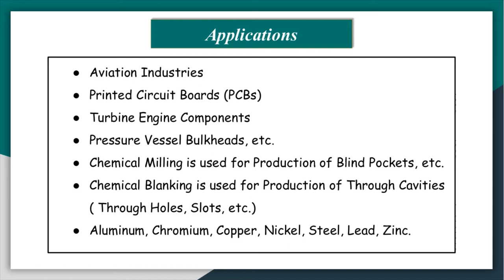The chemical milling process can be used for various materials, including aluminum, chromium, copper, nickel, nickel steel, lead, and zinc. For each different material, you need a different etchant that can successfully react with that work piece material. Similarly, you must select an appropriate masking material that does not chemically react with the etchant or the work piece.